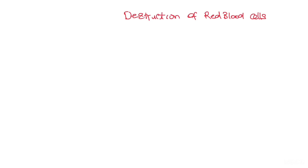Red blood cells have a lifespan of about 120 days. This may vary based on the type of cells — for example, in a sickle cell patient their lifespan is greatly reduced, less than 120 days. The lifespan of red blood cells is dependent on the environment they are in, so if it's a hostile environment or there are extracellular influences such as oxidative stress, these red blood cells will be broken down much sooner.